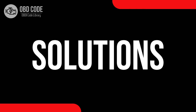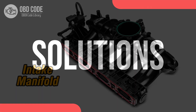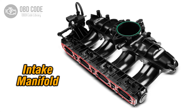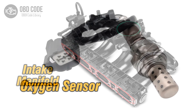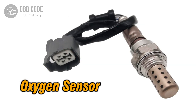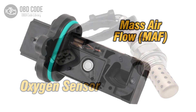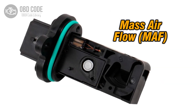Code P0170 Solutions: 1. Inspect and repair any vacuum leaks in the intake manifold. 2. Replace the oxygen (O2) sensor if it is faulty. 3. Check and clean or replace the mass air flow (MAF) sensor if necessary.